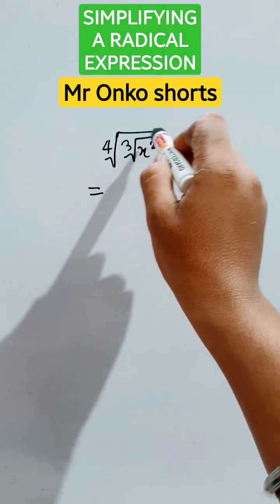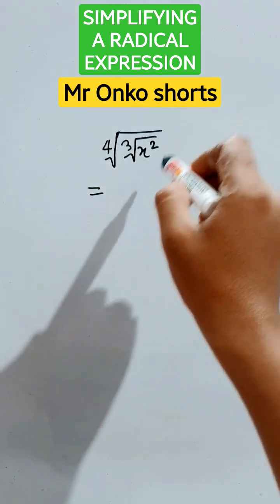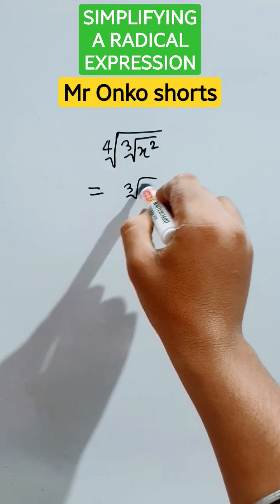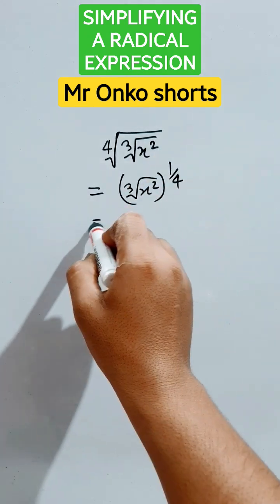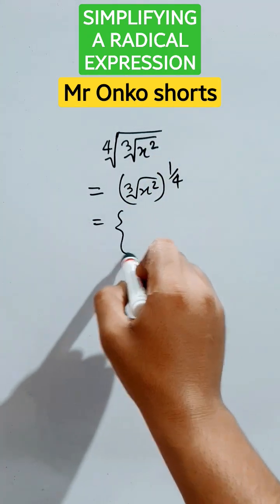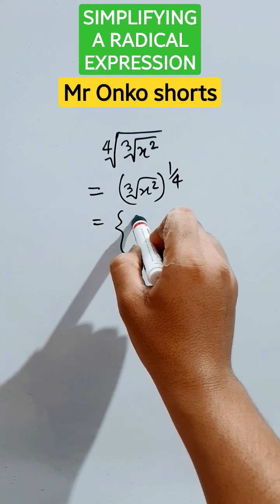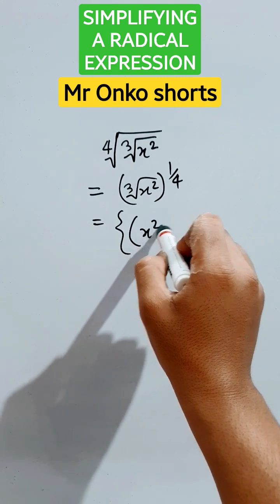So first of all, cubed root of x square whole to the power 1 by 4 we can write it. Now further we can write this as x square whole to the power 1 by 3 whole to the power 1 by 4.